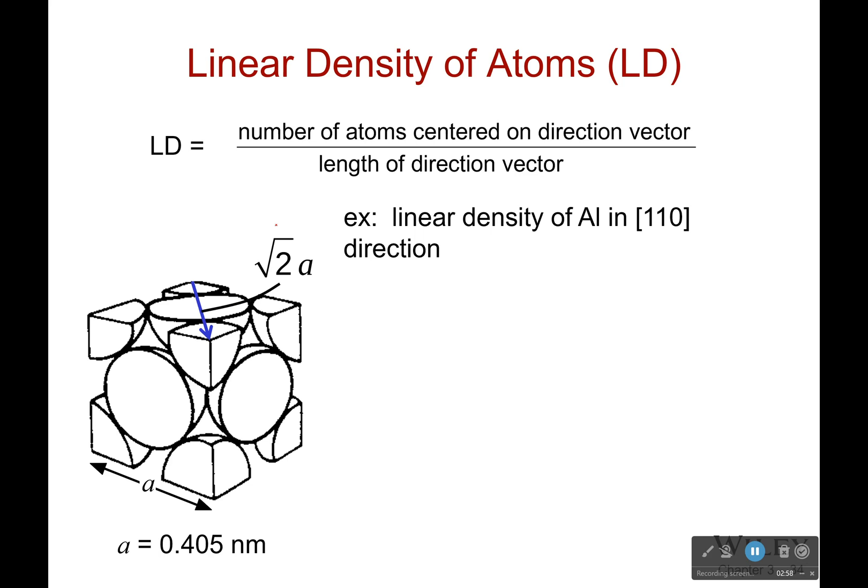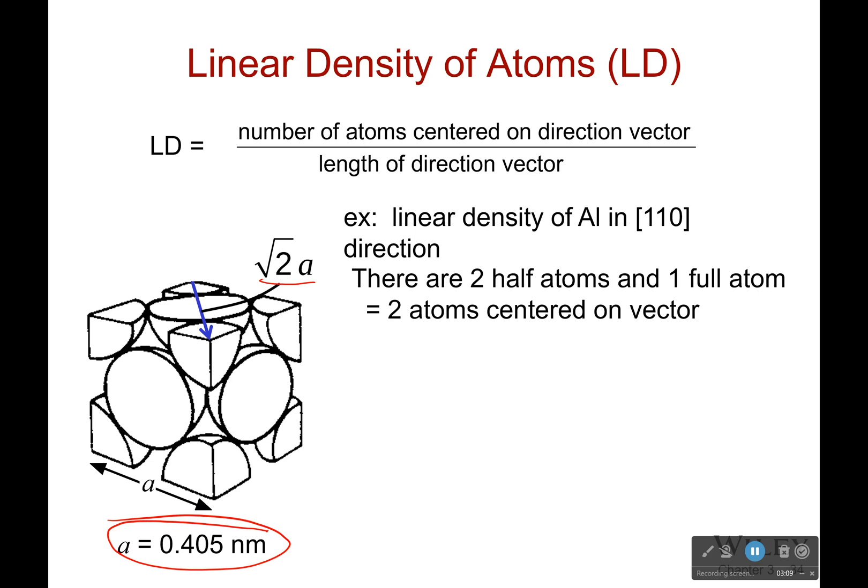What is the length of that direction? That is √2a, and we know what a is - we can look that up from some tables. Now, there are two half atoms and one full atom in this direction. You're like, wait, wait, wait, no, there's one half atom and two eighth atoms. You are completely correct. However, and this is where things get weird: when it's linear density, we're only looking at it along the line. If I'm looking at it from the top, this looks like a whole atom, doesn't it?